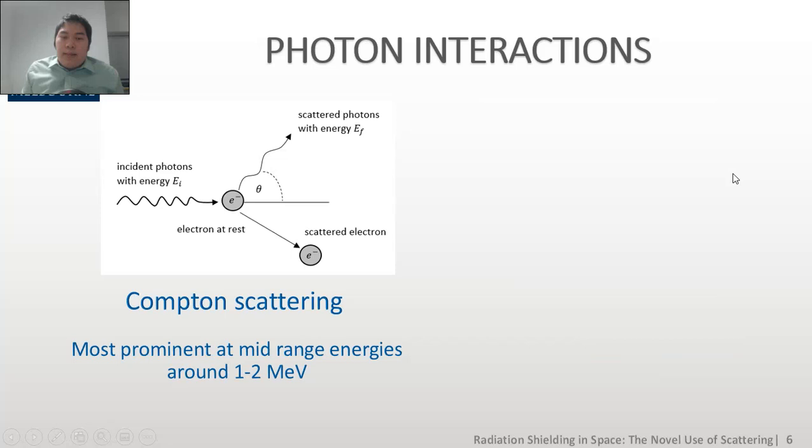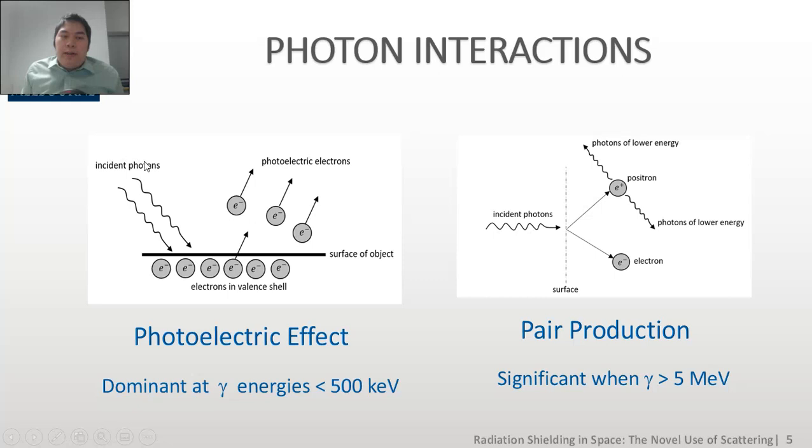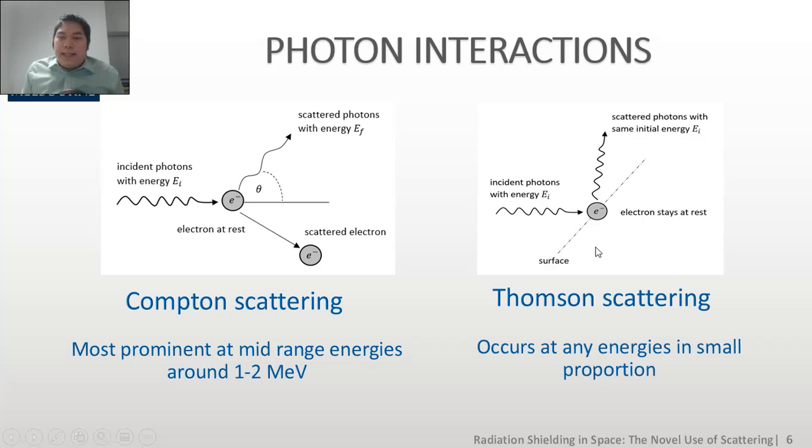Since photoelectric effect and pair production result in the disintegration of the photons, and Thomson scattering is very negligible compared to other scattering phenomena, we've concluded that Compton scattering is actually our desired photon interaction that we will use to study the possibility of putting a radiation shield material in between the sun and the spacecraft.